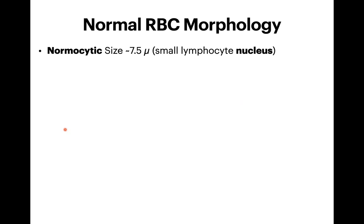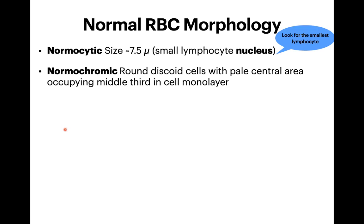Normal RBC is normocytic, with a size of around 7.5 microns — the size of the small lymphocyte nucleus, not the small lymphocyte itself. Always search for the smallest lymphocyte and compare your RBC size to its nucleus. RBCs are normochromic when the pale central area occupies the middle third in the cell monolayer — the area where cells lie in a single layer without touching each other.